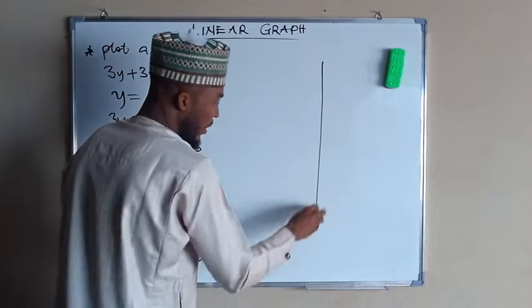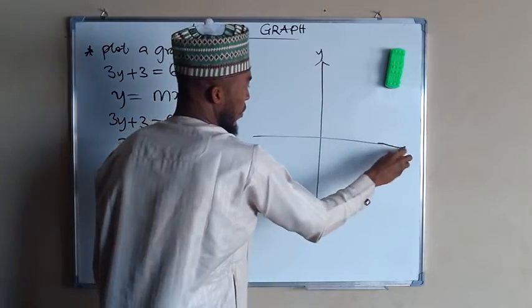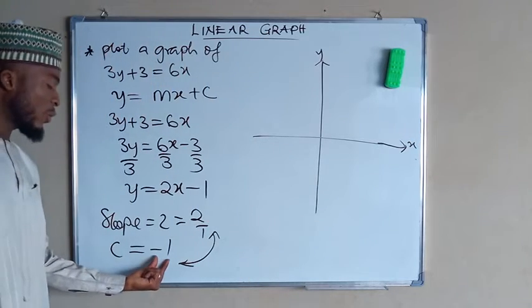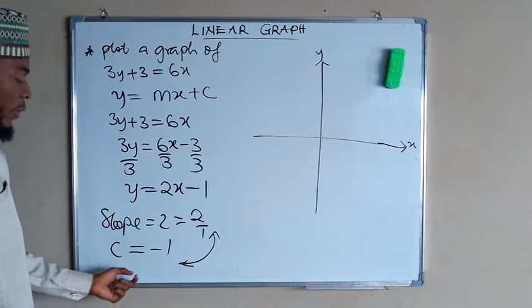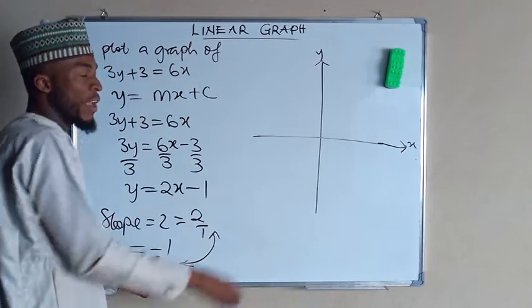So our graph is going to look like this. This is the y-axis while this is the x-axis. Remember to always plot the intercept first, which is the value of y when x equals 0, and it is along the y-axis.